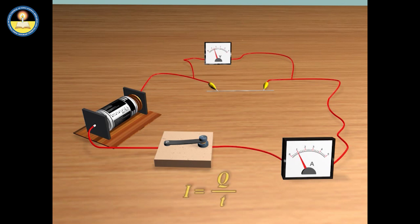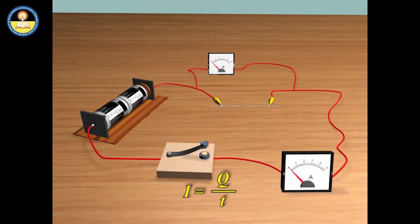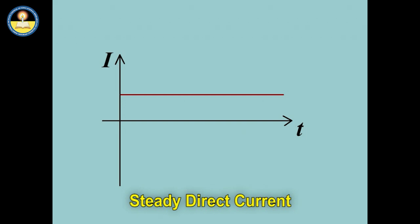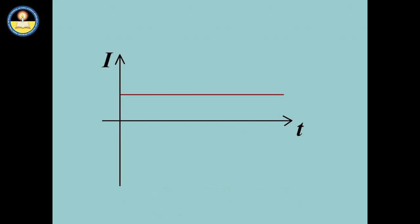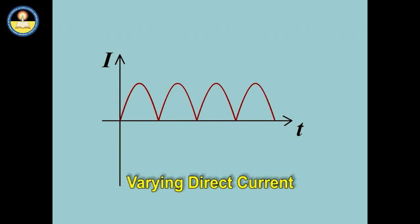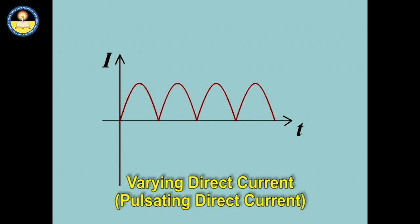The magnitude of electric current is the rate of flow of charge, so the change in this rate changes the magnitude of the current. Electric current due to flow of charges in one direction with a constant rate is called steady direct current. Electric current due to flow of charges in one direction with a varying rate is called varying direct current or pulsating direct current.